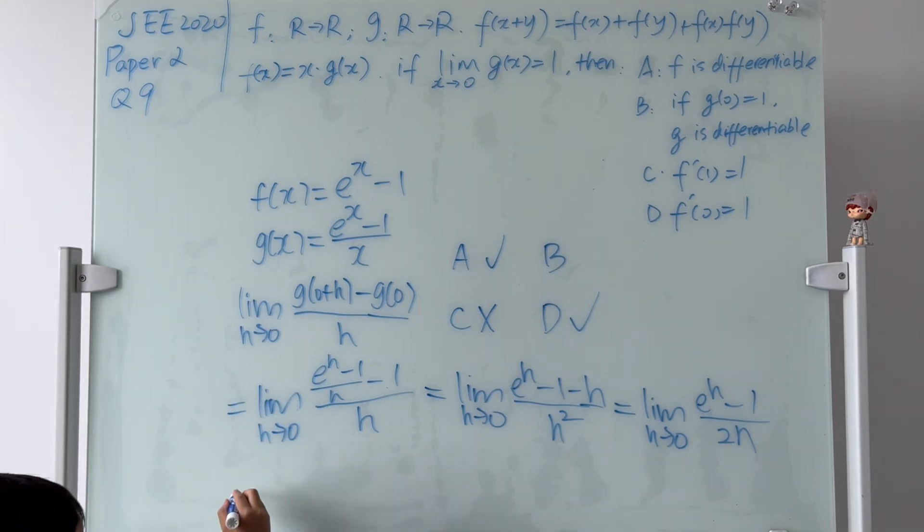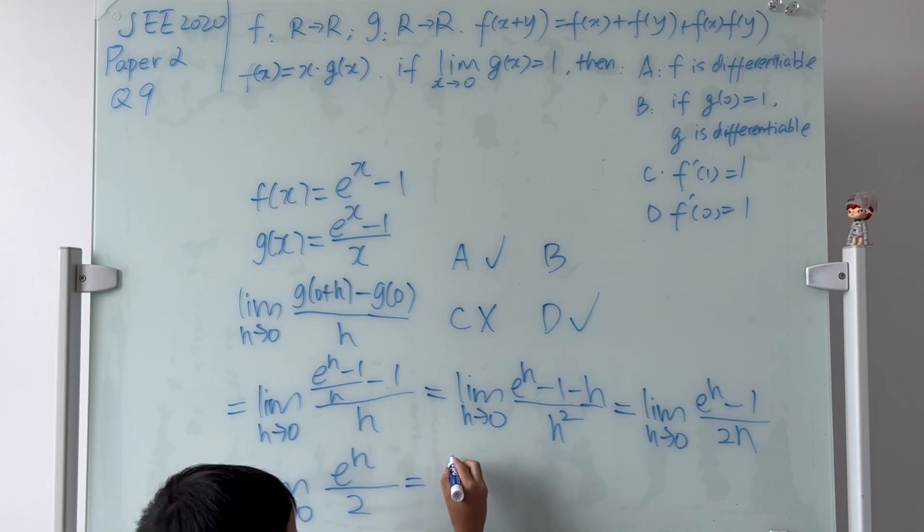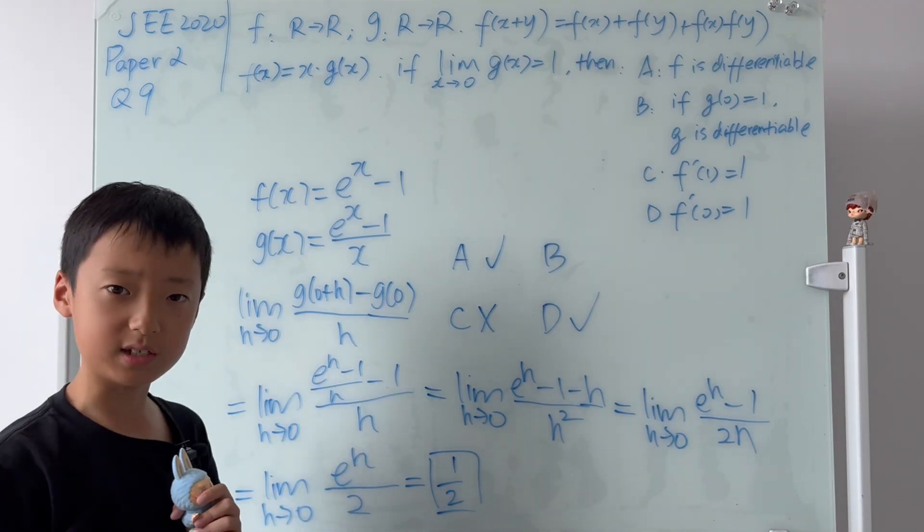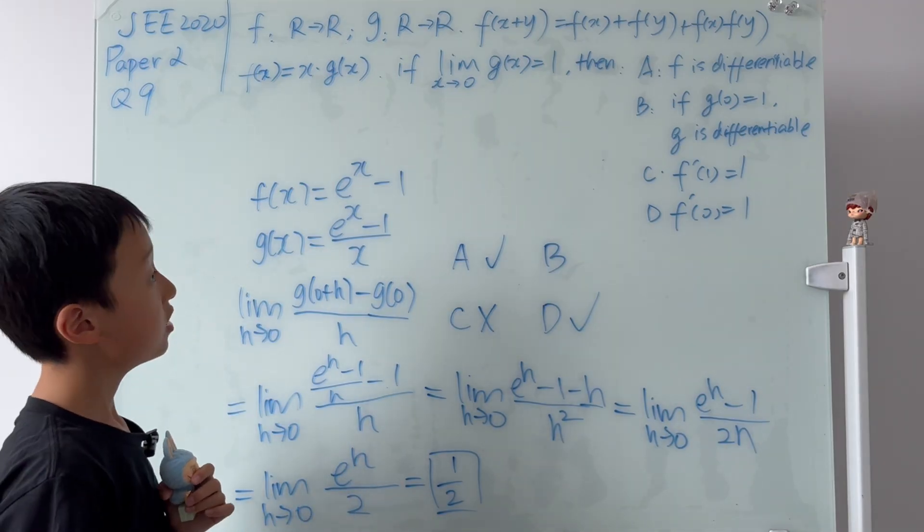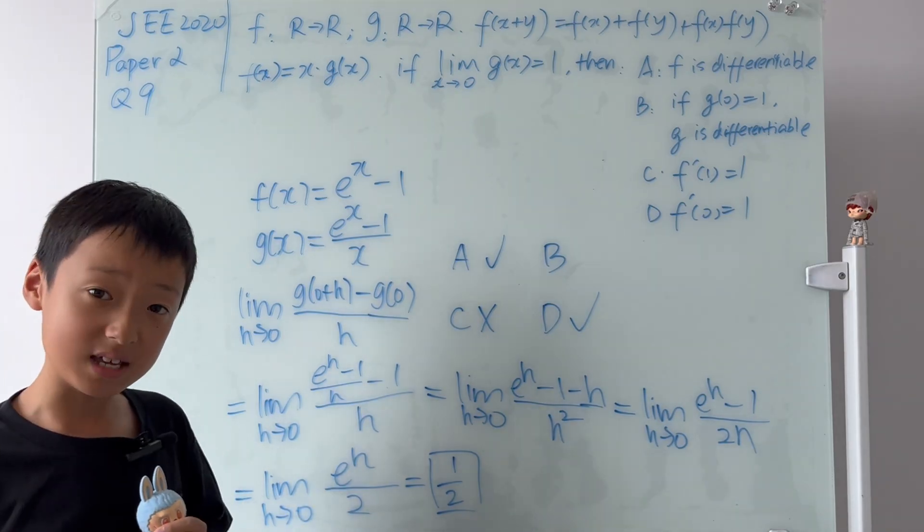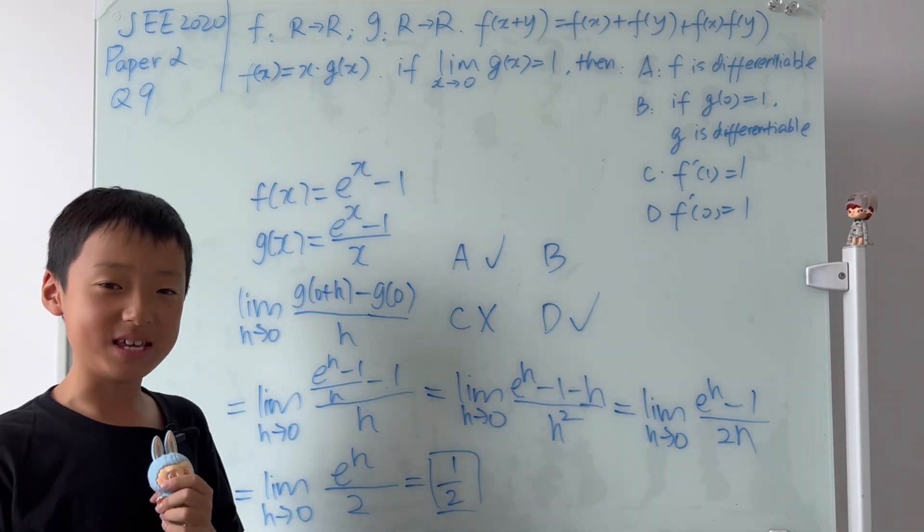So this is equal to the limit as h goes to 0 of the top is just e^h, and the bottom is 2. And this is equal to, you plug in 0, it's 1 over 2, equal to 1/2. Now, you guys, does 1/2 exist? Yes. So we have proved that g is differentiable if g(0) equals to 1. So that means b is correct.